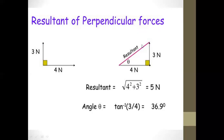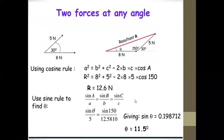The direction of this resultant with the horizontal: we use tangent because we have the opposite and adjacent sides. Tan θ equals opposite over adjacent, which is 3 over 4. So θ equals tan⁻¹(3/4). Using a calculator, the angle θ equals 36.9 degrees.